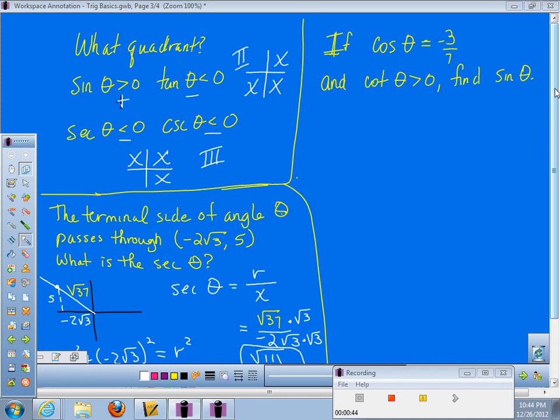Scrolling back up here to the top, this is a similar type of problem. You will have to draw a picture. In this case, they're telling us we know cosine of this unknown angle. We have no idea what size the angle is, nor do we really need to know or care. Cosine is negative 3 sevenths. And they're telling us the cotangent of the same angle is greater than zero. They want us to find sine. Once again, the answer to everything, if you're in doubt, draw a picture.